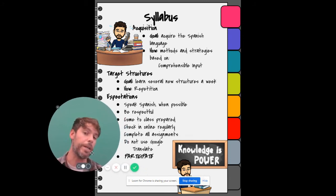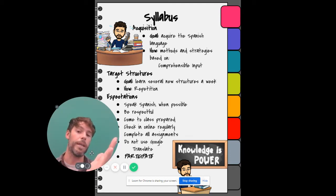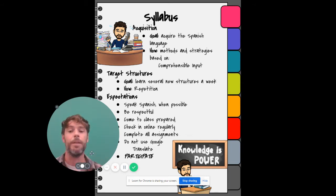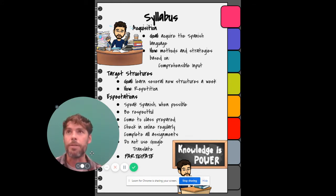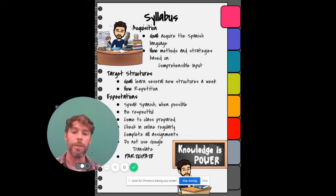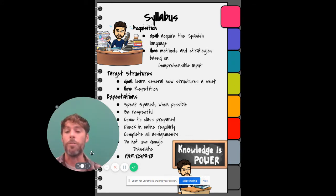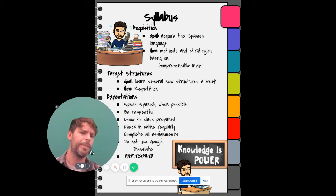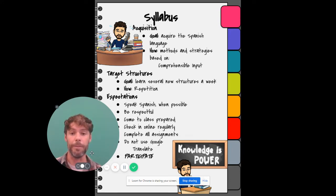We're going to be using very simple phrases, so Google Translate — or I recommend SpanishDict, D-I-C-T dot com or the app — there's really not going to be a lot of need to put whole assignments in there, because we will have used very simple language and repetition, going slowly with what we're learning. So you won't really need to use Google Translate. Even if you're a very beginner, you'll be able to keep up with what we're going to do with comprehensible input.